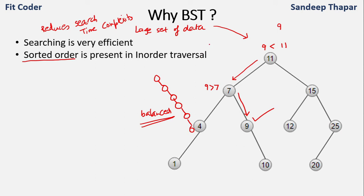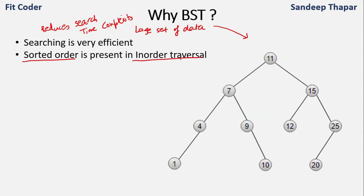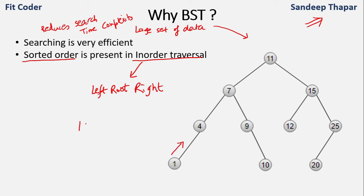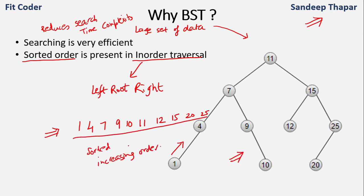The second advantage is that the sorted order of the tree is stored in the inorder traversal, which is left-root-right. The inorder traversal of this BST gives: 1, 4, 7, 9, 10, 11, 12, 15, 20, 25 — which is sorted. This property of BST means the inorder traversal always gives us the sorted order.